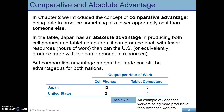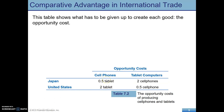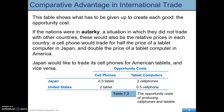For the United States, it's still a 2-to-1 relationship: the opportunity cost of cell phones is two tablets, and the opportunity cost of a tablet is half a cell phone. If the nations are in autarky — meaning no trade at all — these ratios would also be the relative prices in each country. So a cell phone would trade for half the price of a tablet in Japan and double the price of a tablet in the United States.